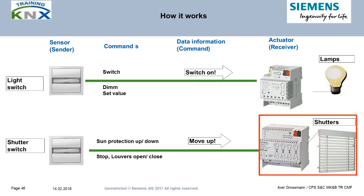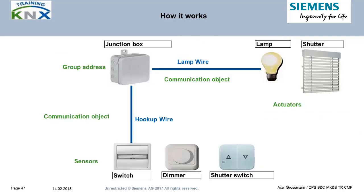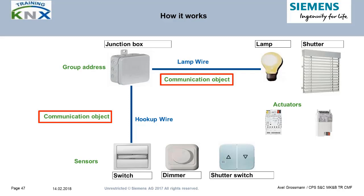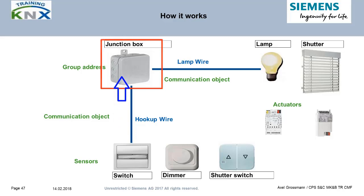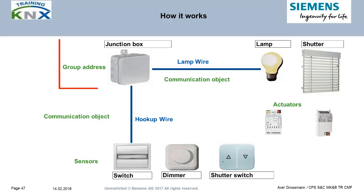Another example is blinds control. We now learn two important keywords: group address and communication object. The picture shows an analog sample from the traditional world of electrical installations — load and operation unit are connected via junction boxes. In these boxes, the hookup wire from the rocker switch meets the lamp wire on a screw or cage clamp terminal. In the KNX world, you might call the junction box a group address and the two connecting wires as communication objects.